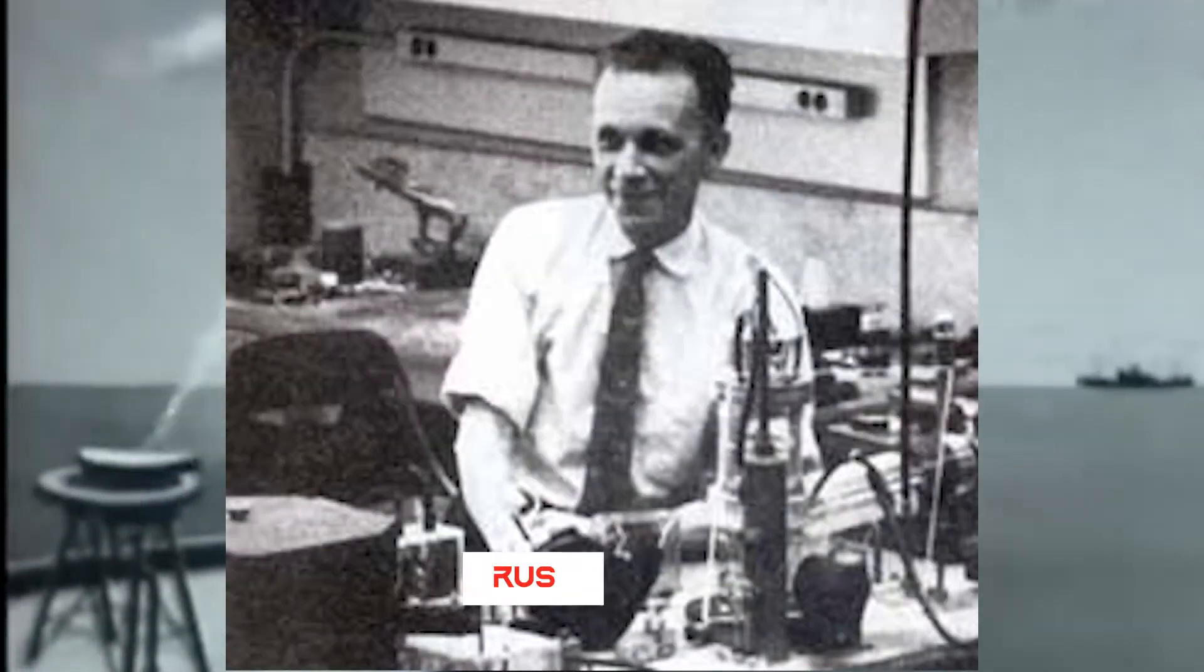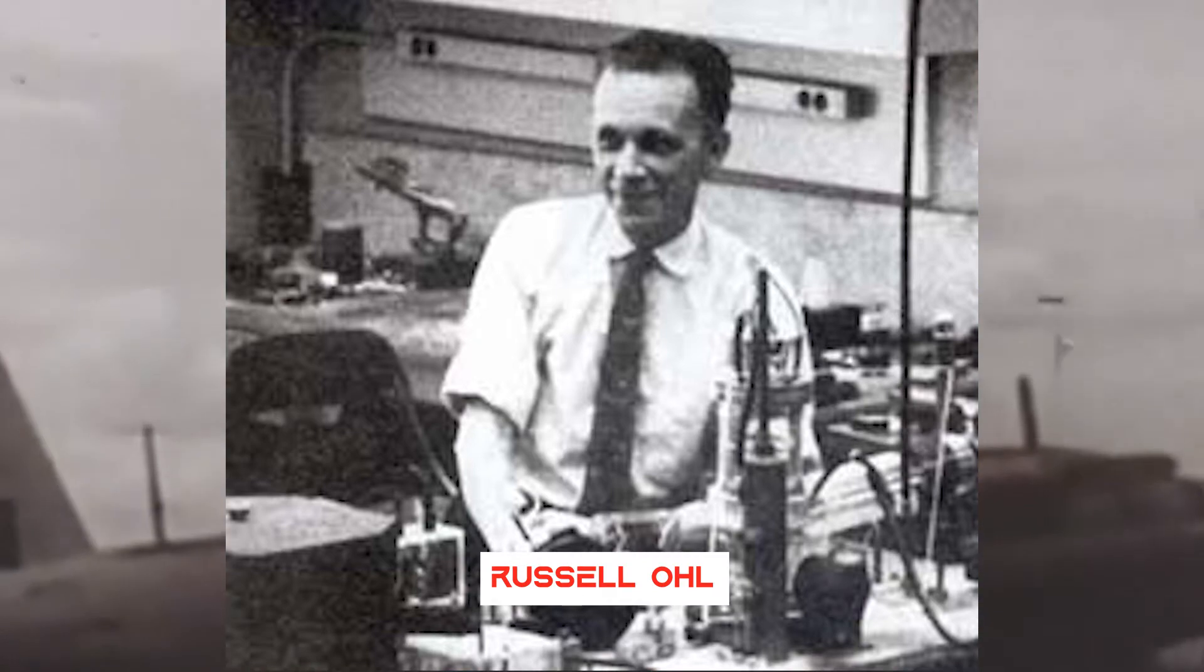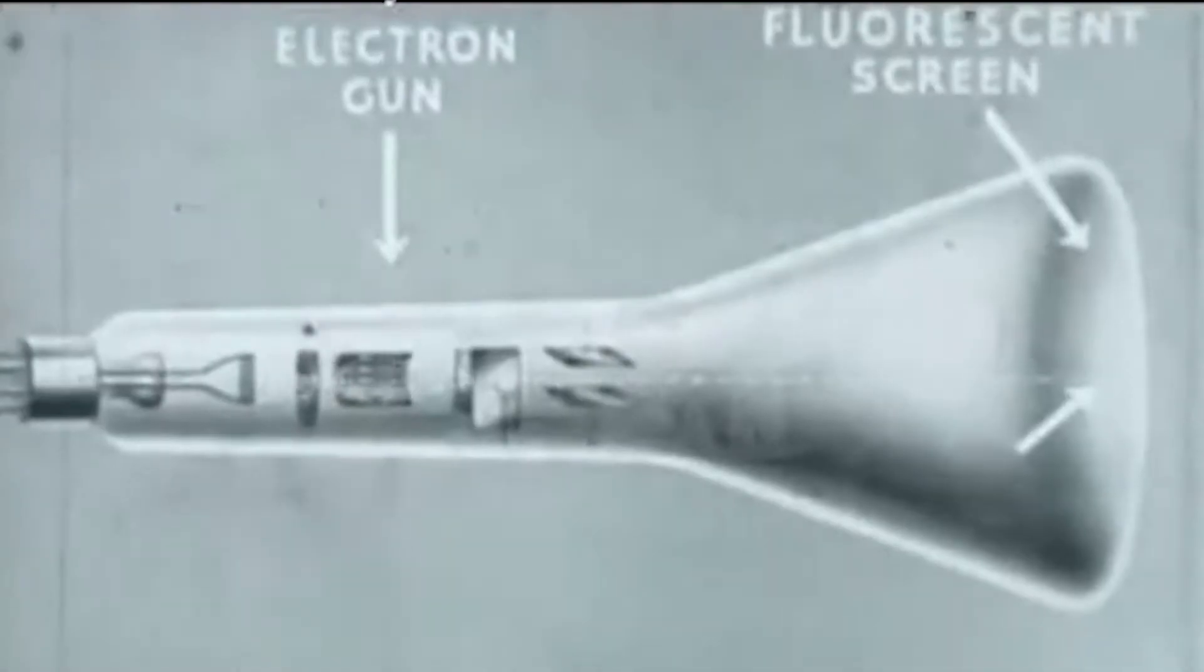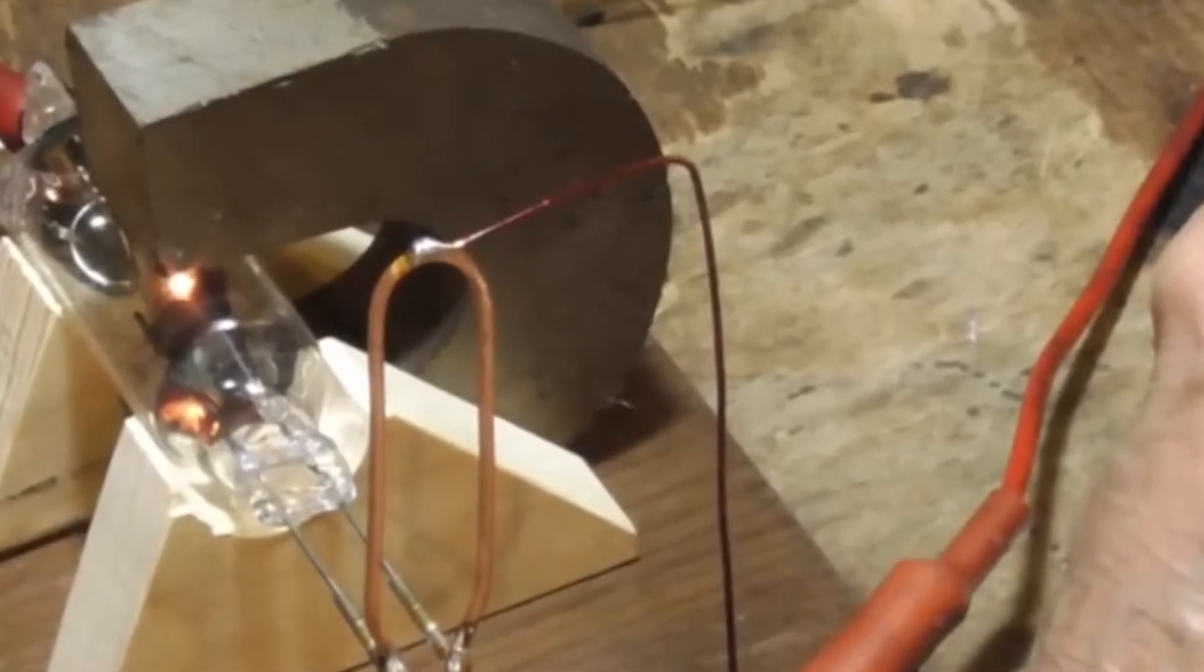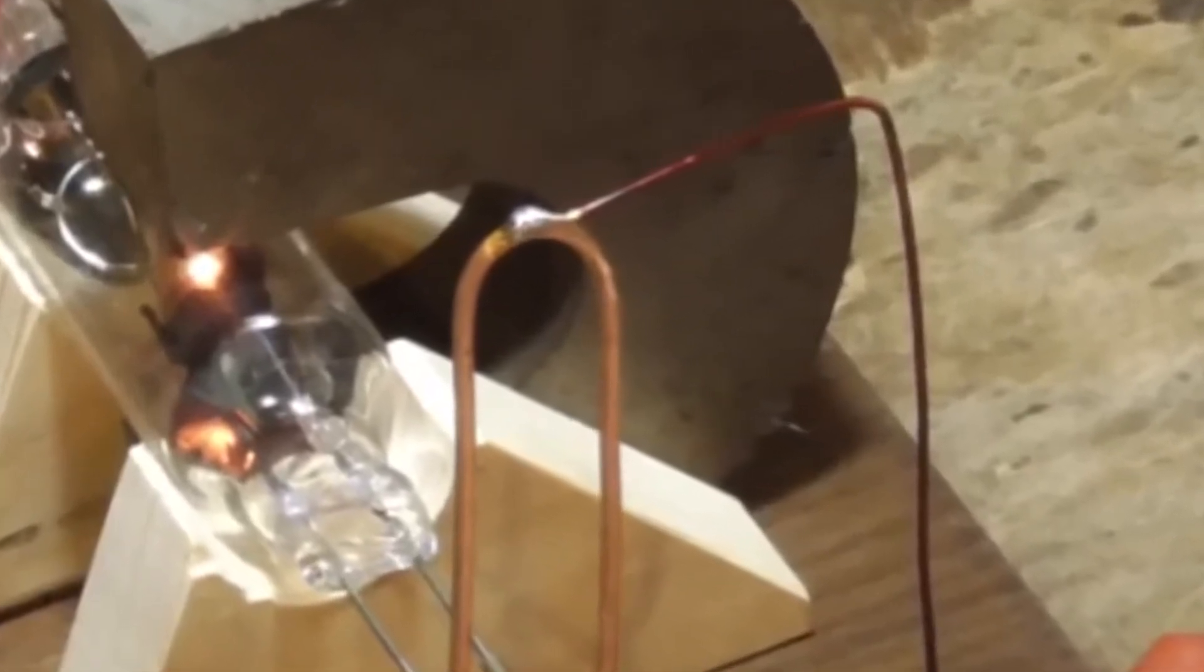Russell Ohl, the scientist who rediscovered this, spent the majority of 1939 trying to grow more pure versions of the crystal. He found that the higher quality of the crystal, the finicky random behavior would disappear, but so did the crystal's ability to operate as a radio detector.